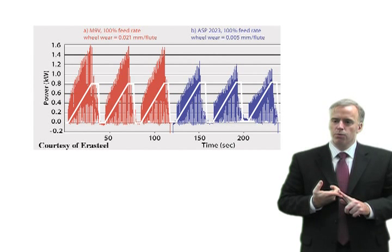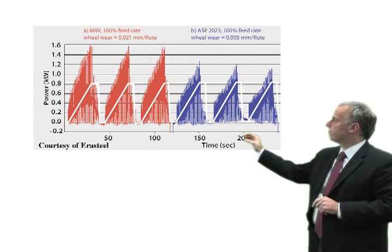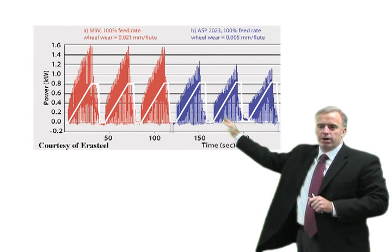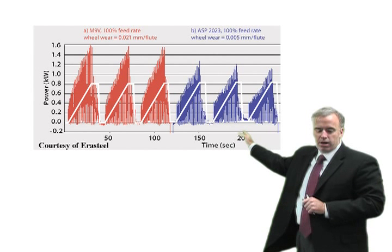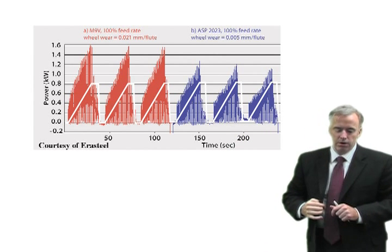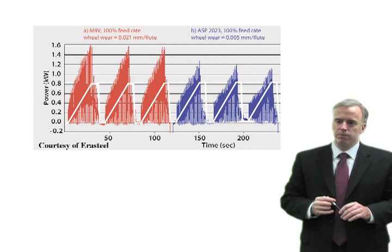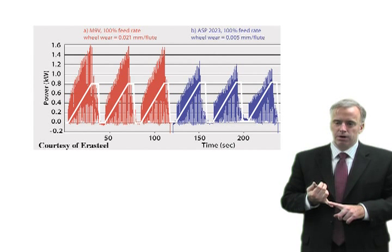Number two, the wheel wear for the difficult to grind material was about 21 microns per flute. The wheel wear for the easier to grind material was less than a quarter of that, 5 microns per flute. So it was a lot easier to grind.